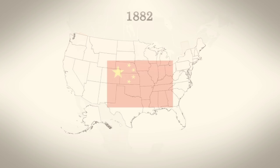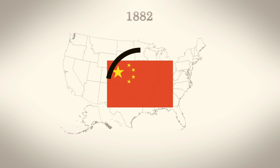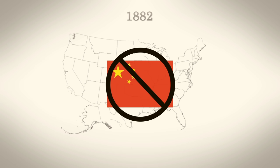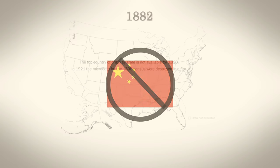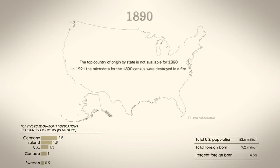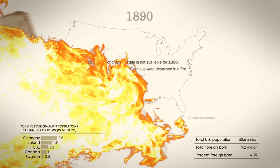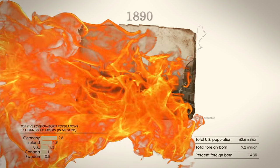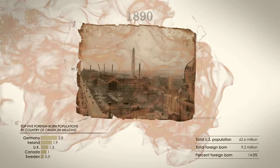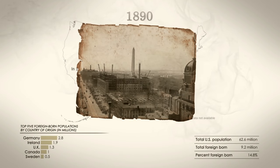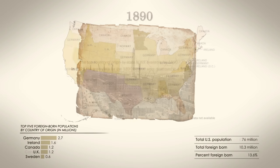In 1882, the Chinese Exclusion Act blocked the arrival of large numbers of Asian immigrants for much of the next century. Unfortunately, the overall microdata for the 1890 census were destroyed in a 1921 fire at the Department of Commerce.